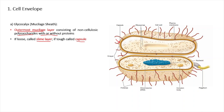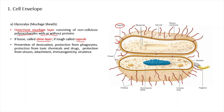So basically, slime layer and capsule are two forms of glycocalyx. If it is a loose layer, we call it a slime layer. If it is a tough layer, glycocalyx is called a capsule. In the figure you can see the capsule, which is the outermost mucilaginous tough covering of a bacterial cell.